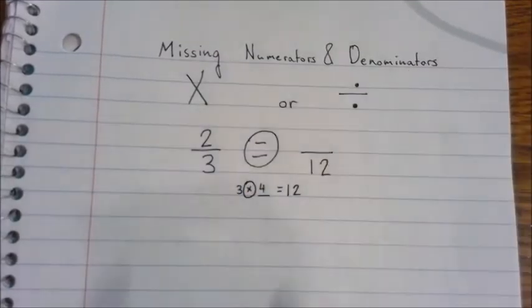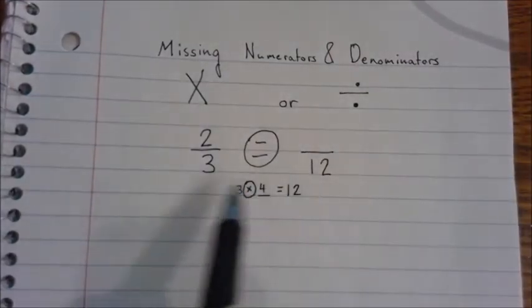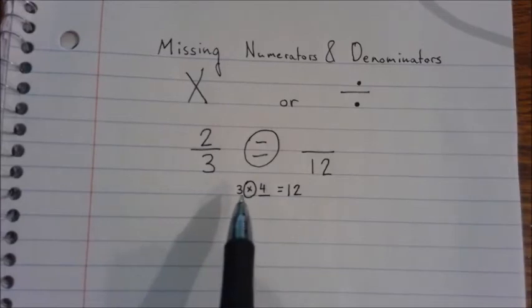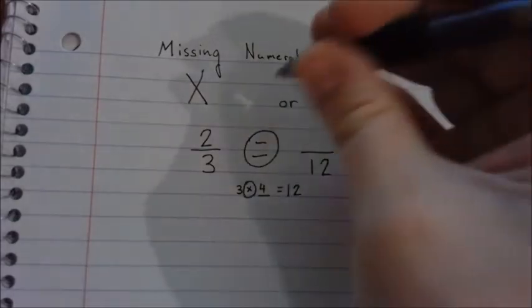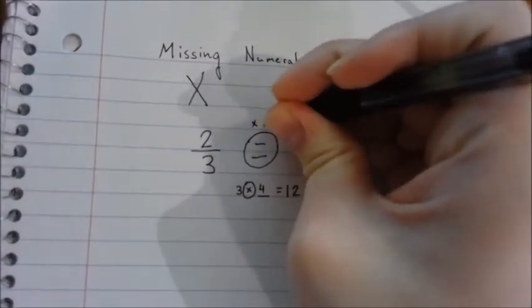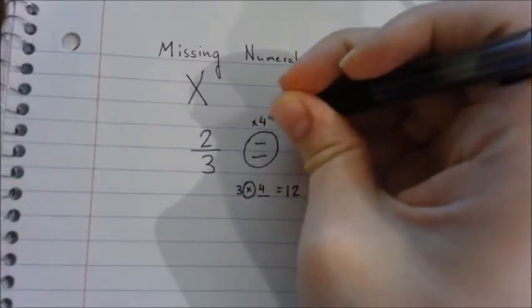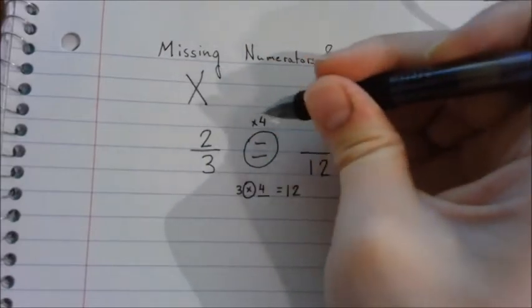This is what we did to the bottom part of these fractions, to the denominators of these fractions: we multiplied times 4. So if you're going to multiply times 4 by the denominators, you also have to multiply the numerators times 4. So we're going to go ahead and rewrite that up here.